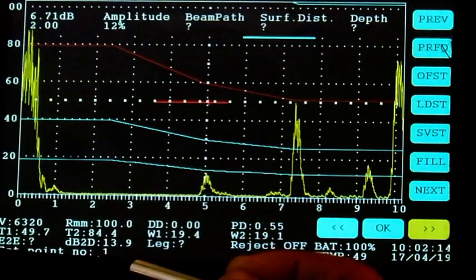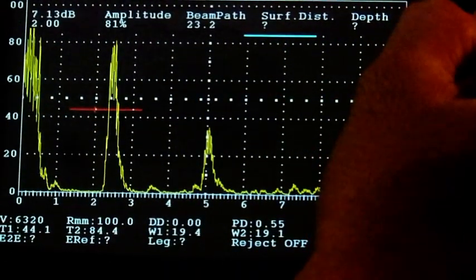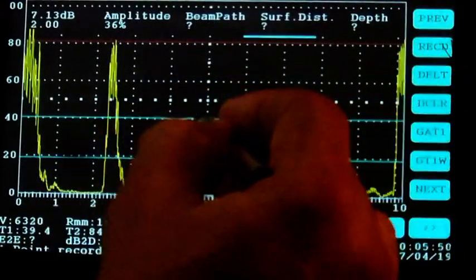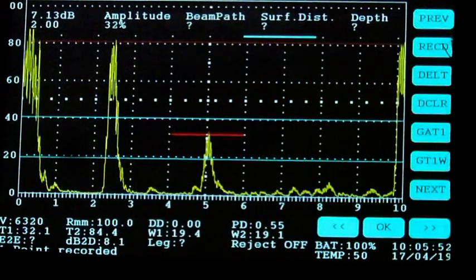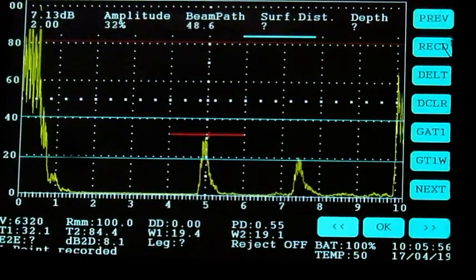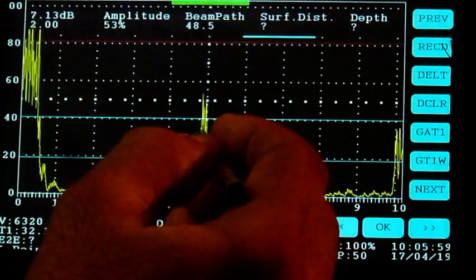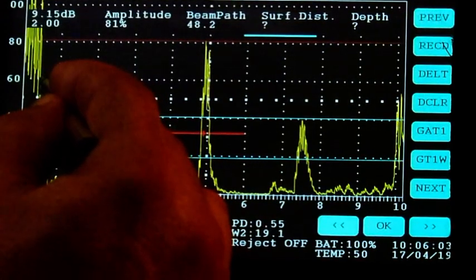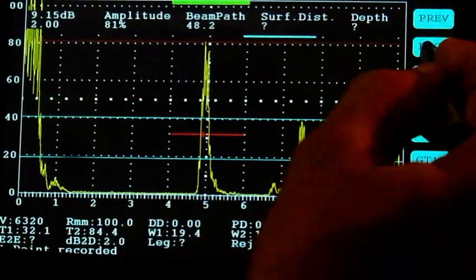We will essentially use the same holes. The first point, as we did for DAC, is taken and then recorded. The second point is taken, but this time we will raise the amplitude to the same level as the earlier one, to 80%, and then record.